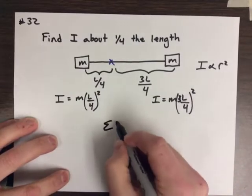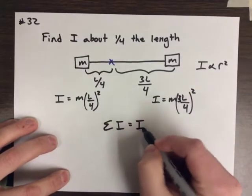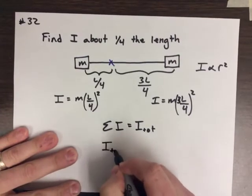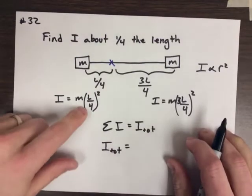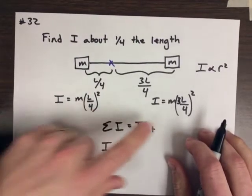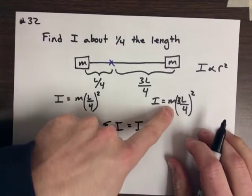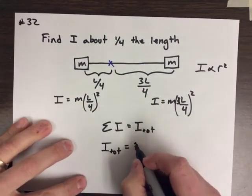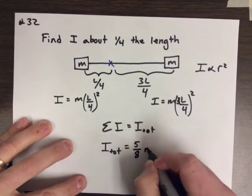We're going to go ahead and sum up the I's to get I total. And when we do that, just to walk you through it. So, this is one sixteenth mL squared over here. This is going to be nine sixteenths mL squared. So, that gives me a total of ten sixteenths or five eighths mL squared.